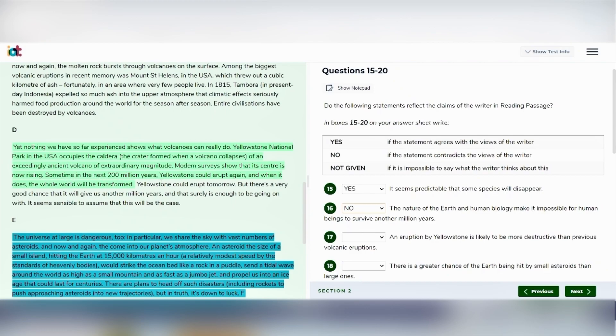Sometime in the next 200 million years, Yellowstone could erupt again and when it does, the whole world will be transformed. So the passage says that Yellowstone is a volcano of extraordinary magnitude and if it erupts again, then its impact will be huge. So its impact will not be like the volcanoes we have seen before, it is going to transform the whole world. Now we'll move to the question and see what it says. It says an eruption by Yellowstone is likely to be more destructive than previous volcanic eruptions. So you can see that it's matching with what is given in the passage. So we can easily decide that it is also a yes statement.